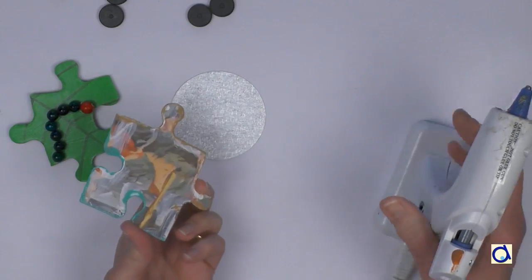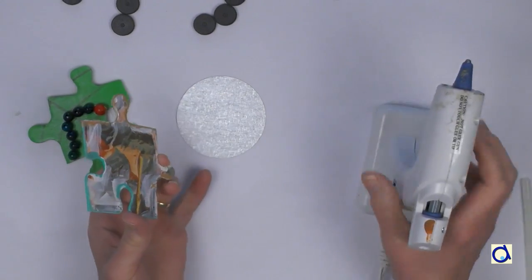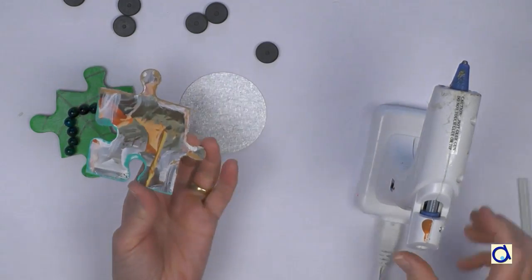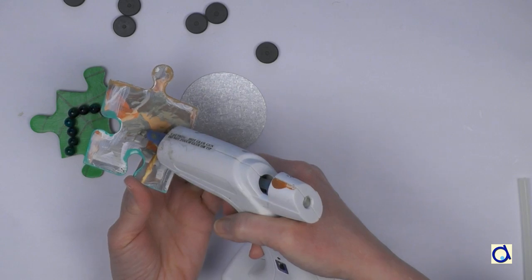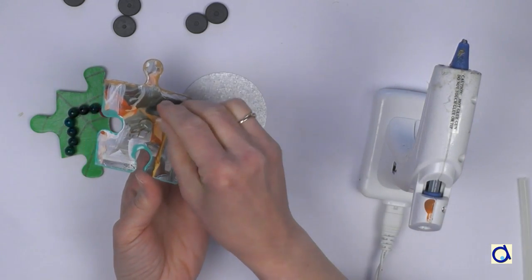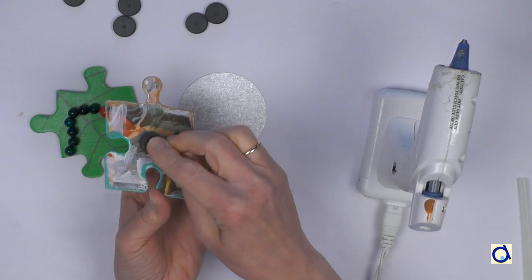When everything is dry, glue a magnet on the back of the puzzle piece. Before gluing the magnet, check which side of the magnet is magnetized by testing it on the fridge for example. Glue the non-magnetic side on the back of your project.